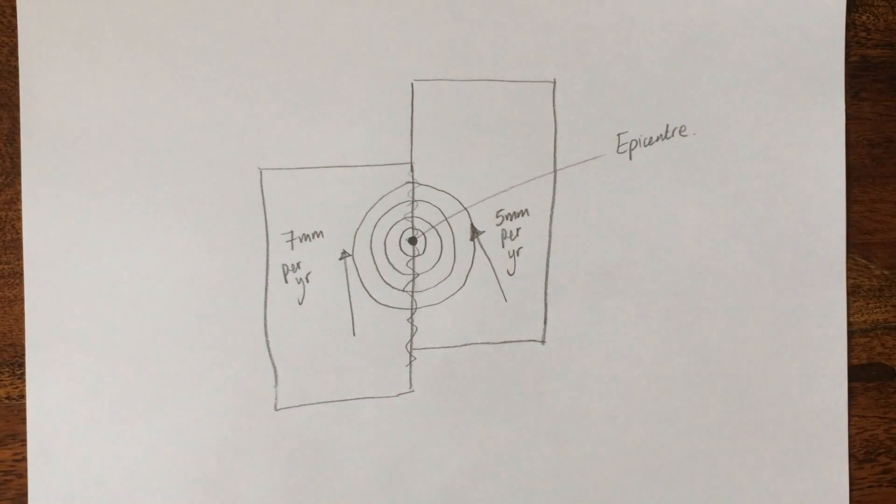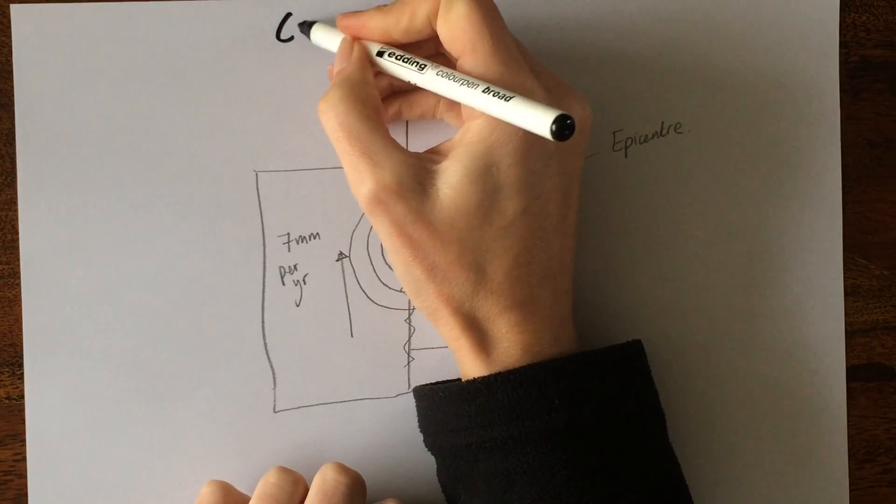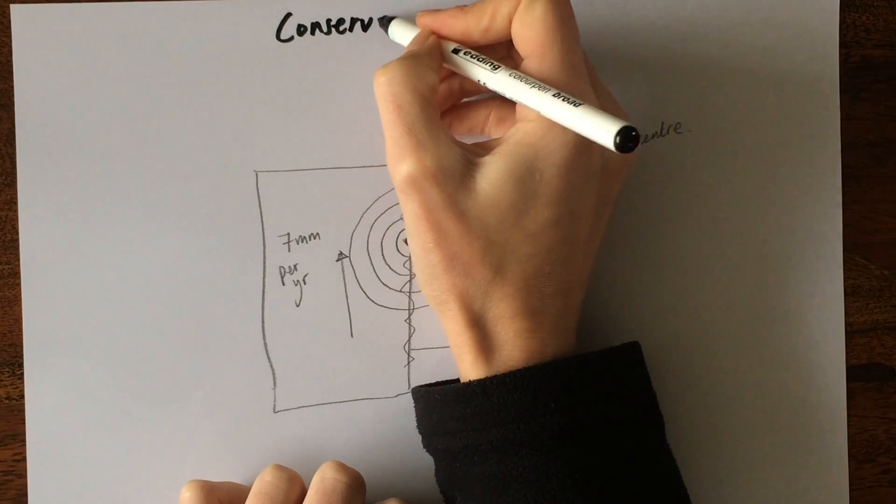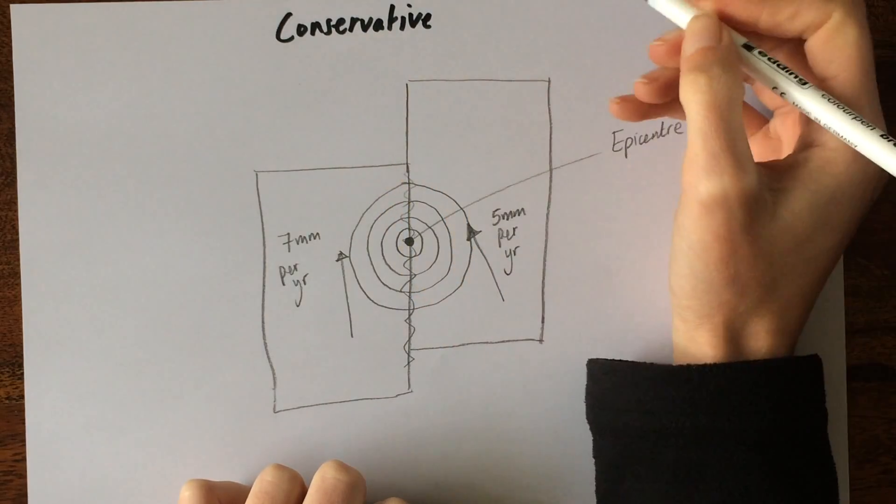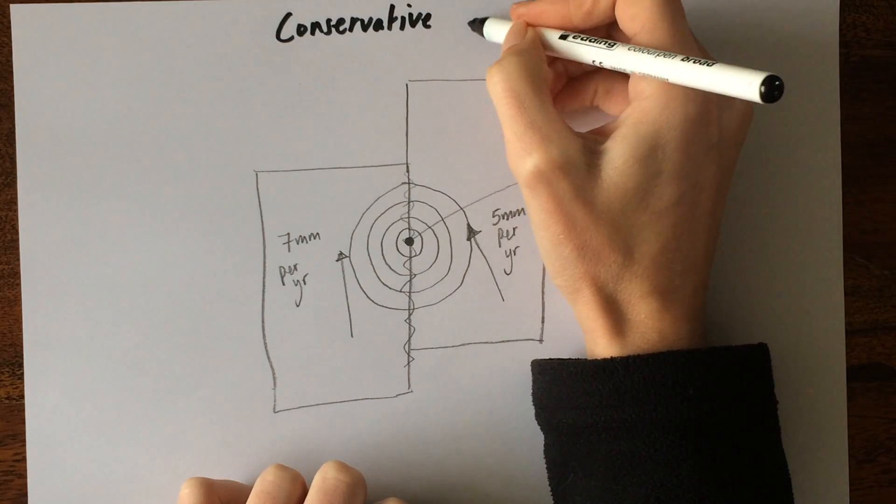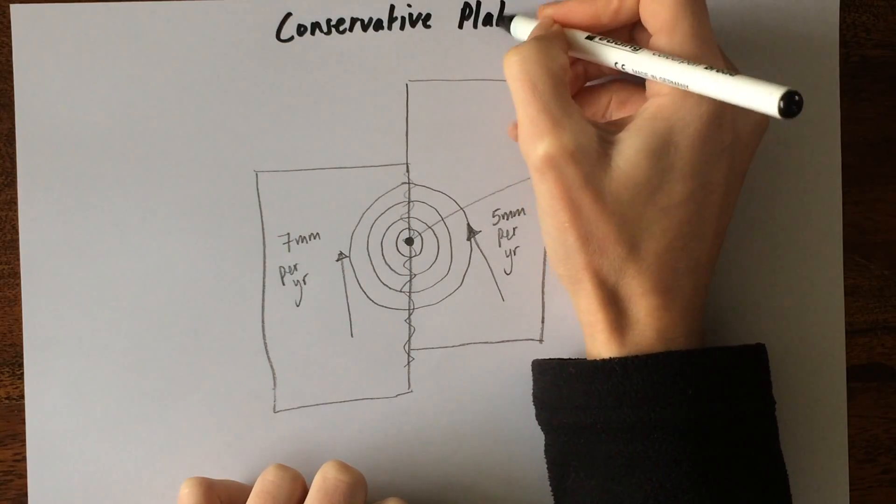This is called a conservative plate boundary. Don't get it confused with constructive. We're not building anything here. It's conservative plate boundary.